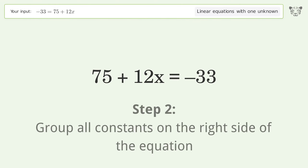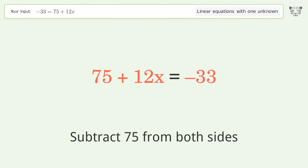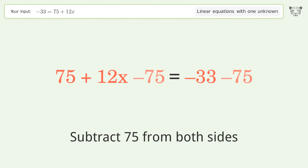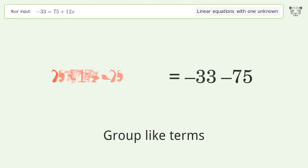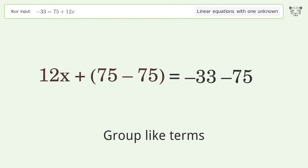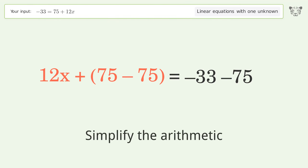Group all constants on the right side of the equation by subtracting 75 from both sides. Then group like terms and simplify the arithmetic.